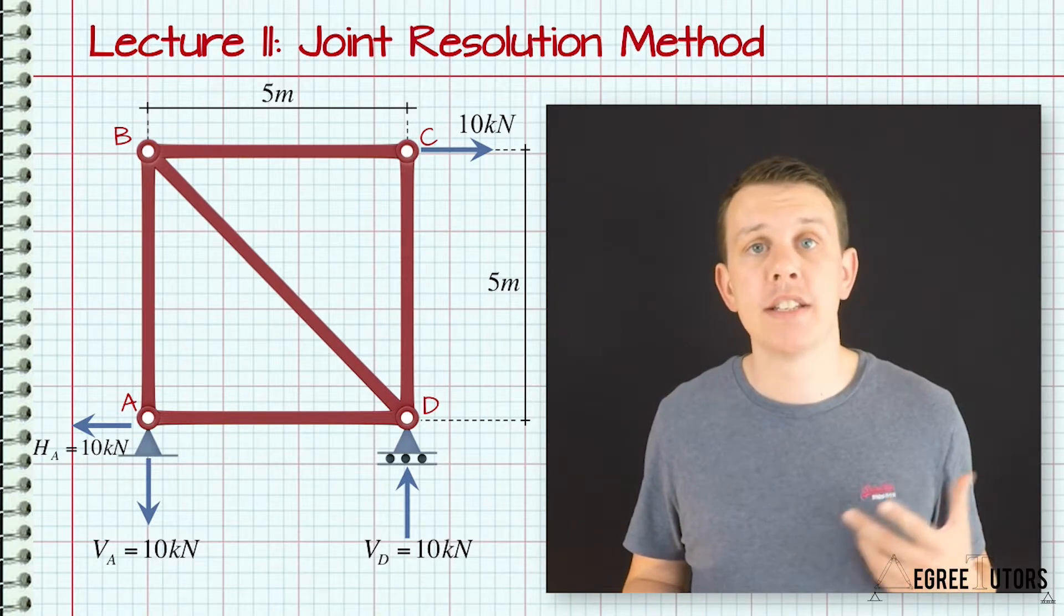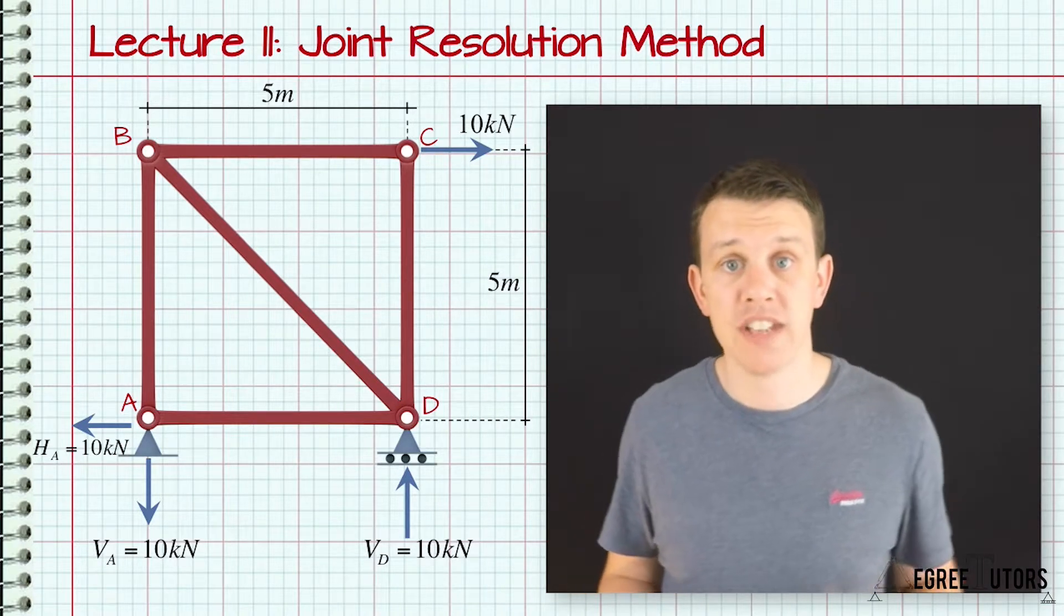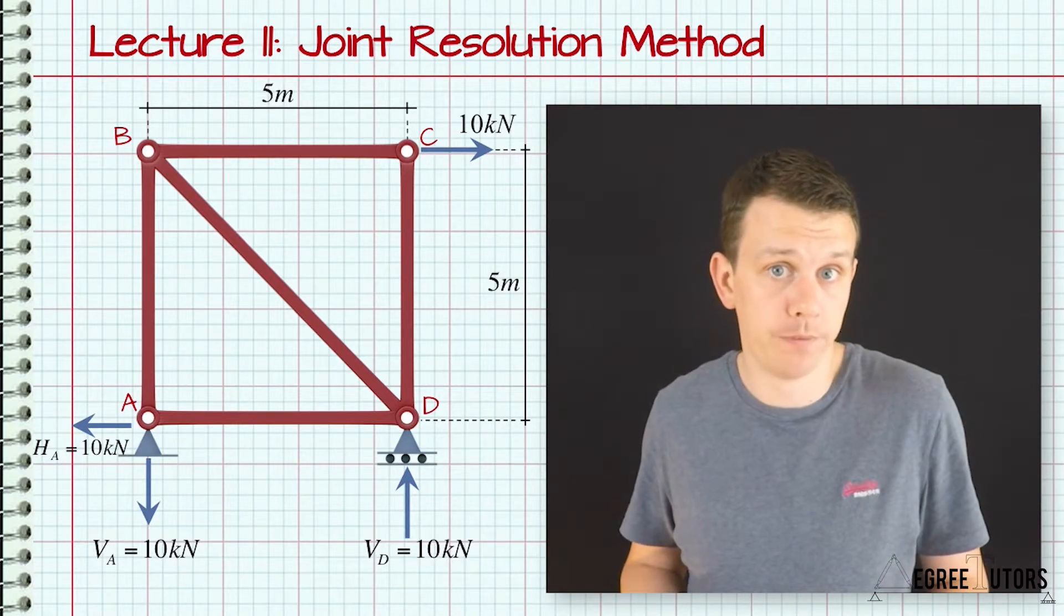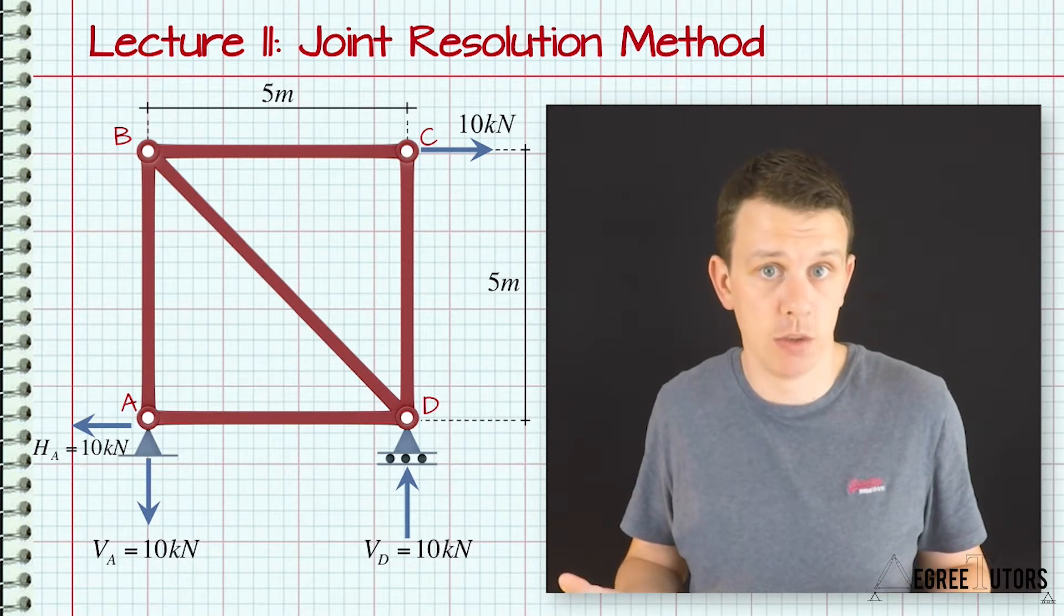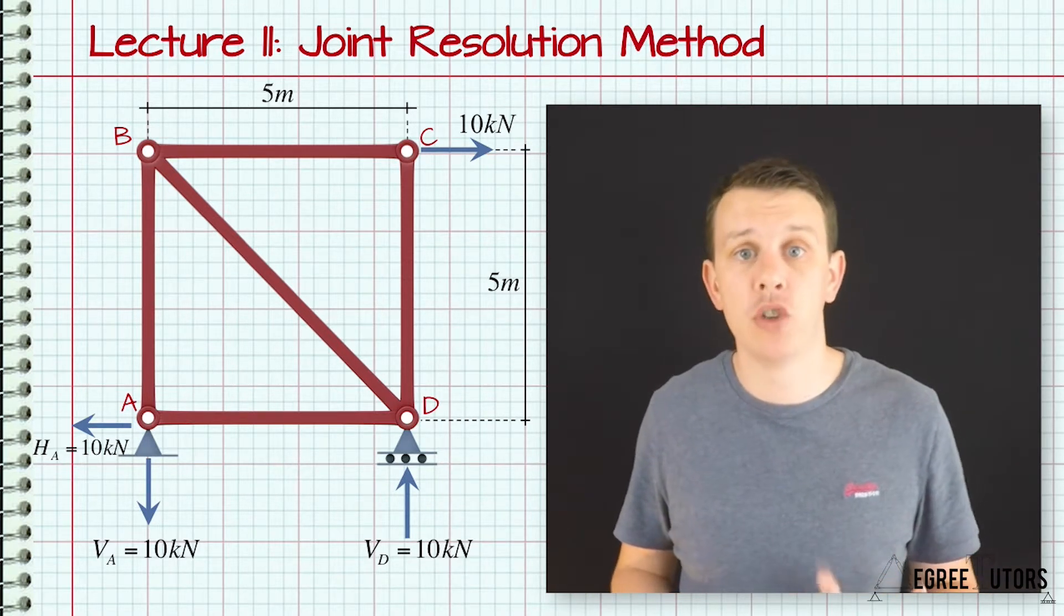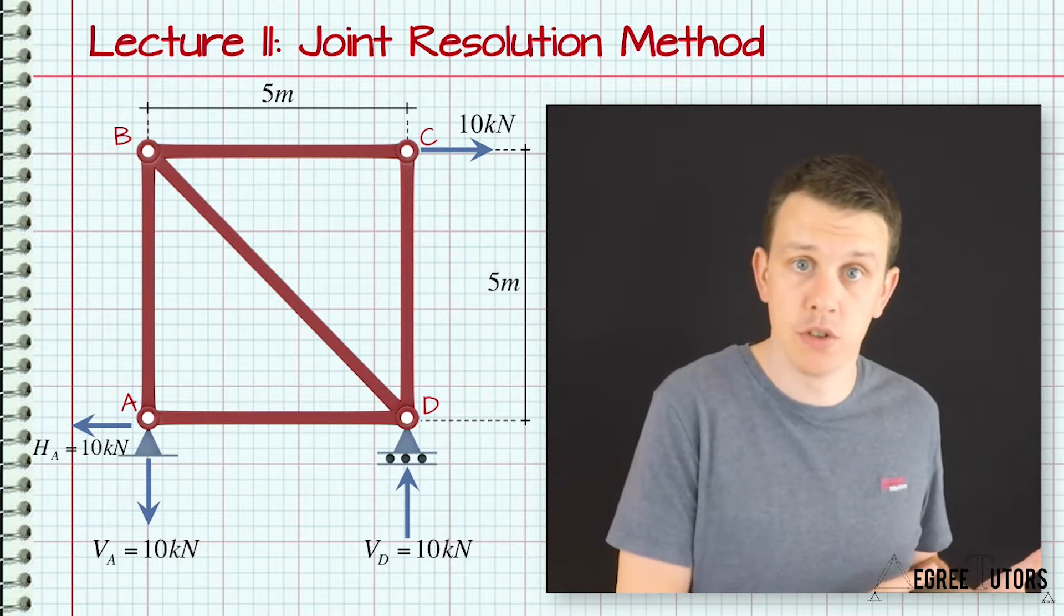We then take that joint after we've cut the members that connect into it and we consider equilibrium of the joint in isolation from the rest of the structure.